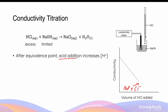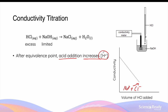After the equivalence point, further addition of acid increases the concentration of hydrogen ions, because these ions are no longer neutralized by hydroxide. This results in an increase in conductivity as seen on the graph. In conductometric titration, we see a turning point in the conductivity changes. In a strong acid and strong base titration, this turning point is clearly identified as the minimum point of the conductivity curve, allowing us to determine the volume of acid at the equivalence point and calculate the concentration of the unknown solution.